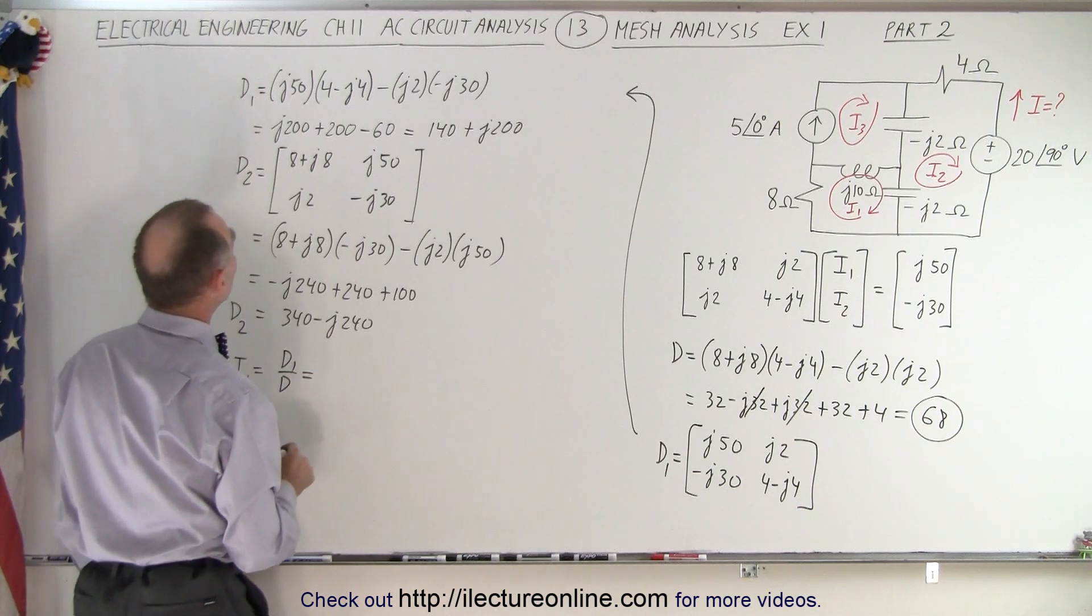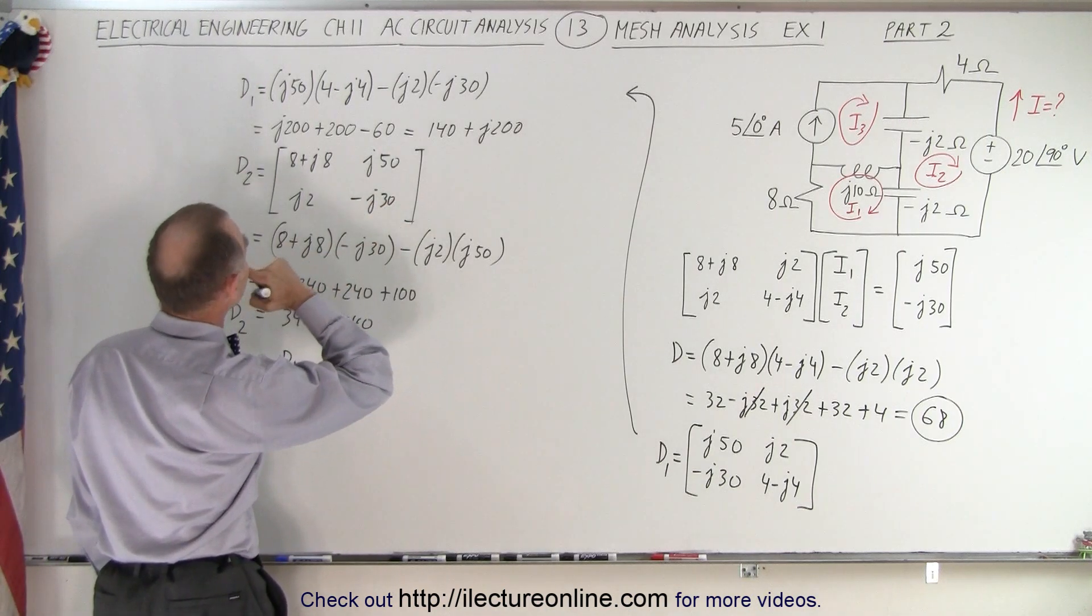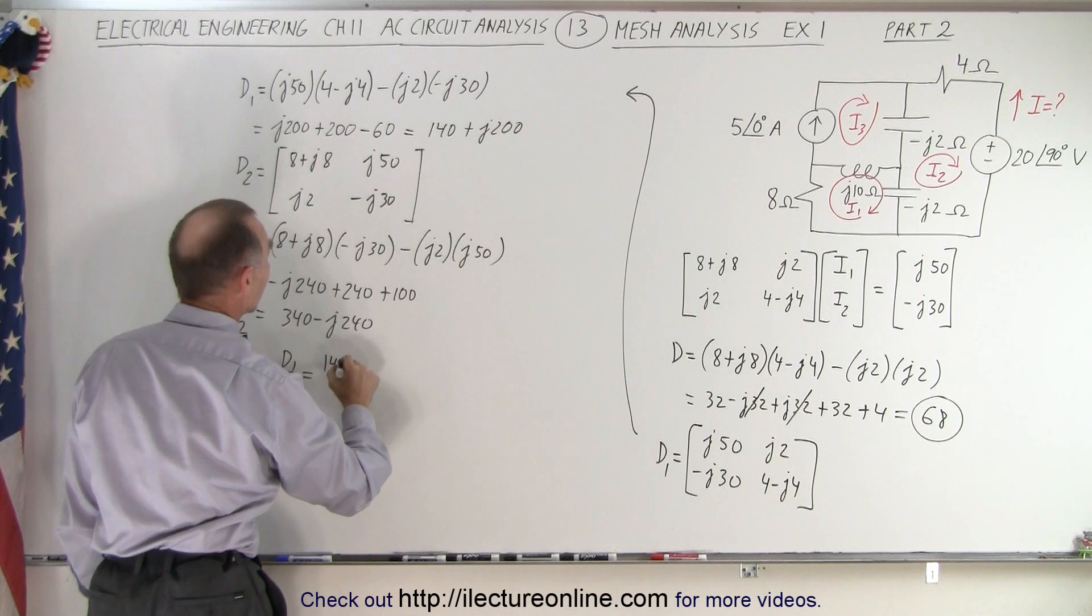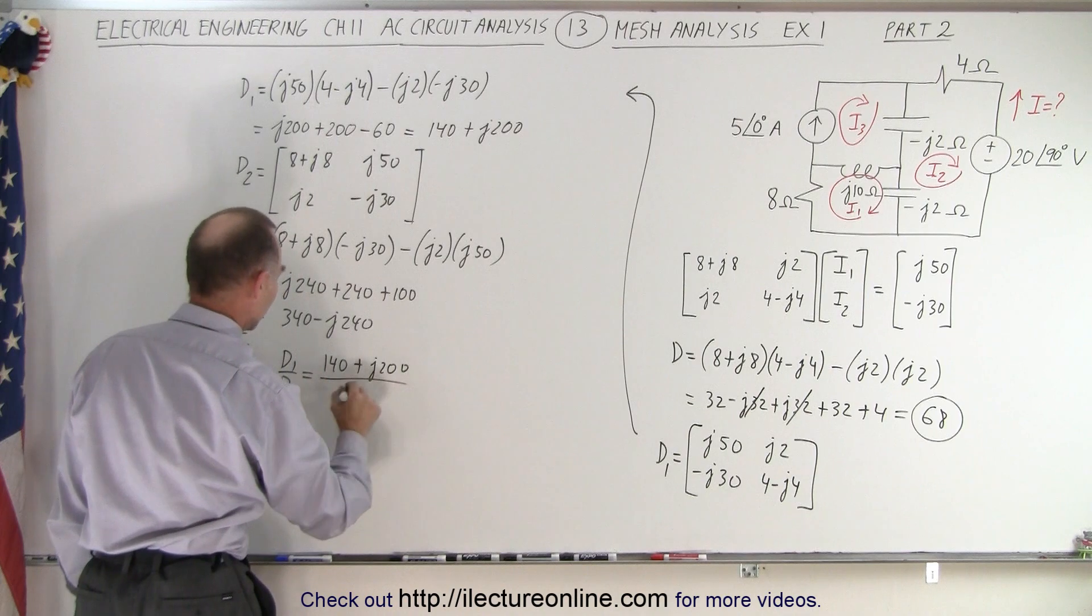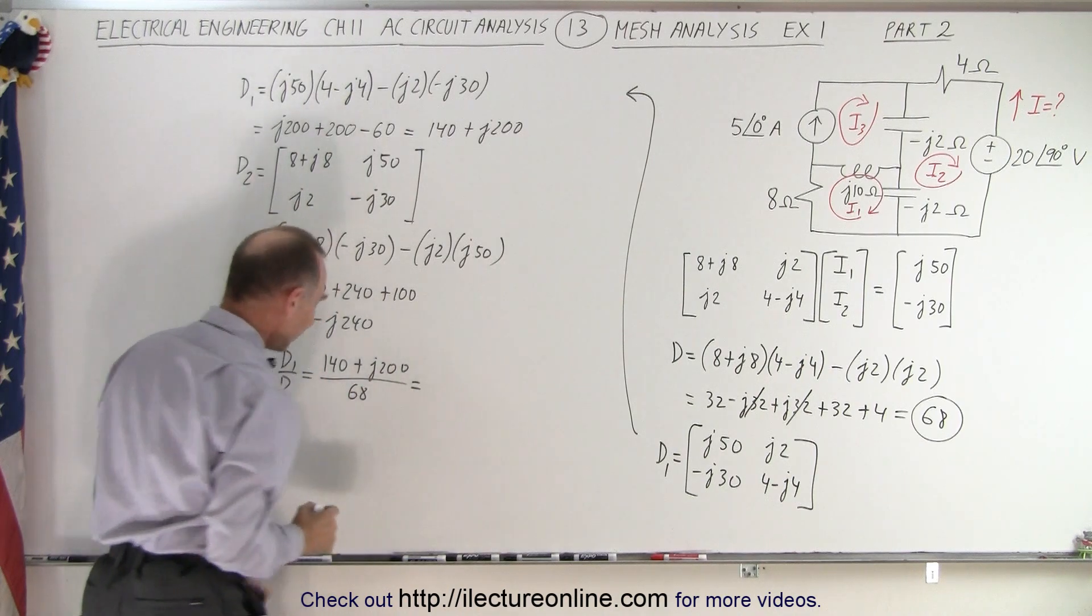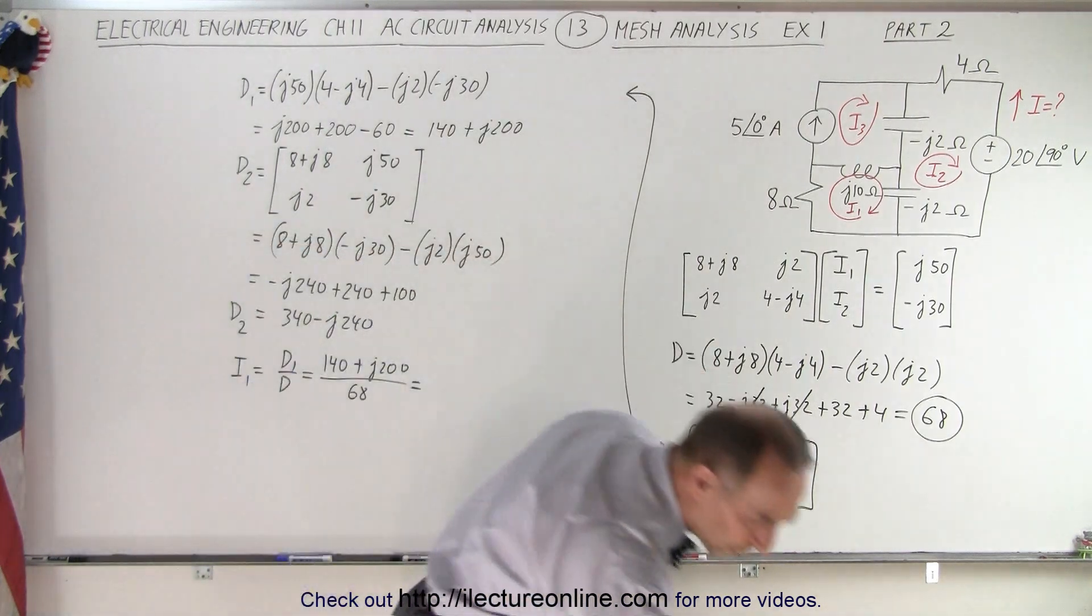It's right here, so we have 140 plus j200 divided by d, which is 68. So that gives us, and of course now we're going to need a calculator.